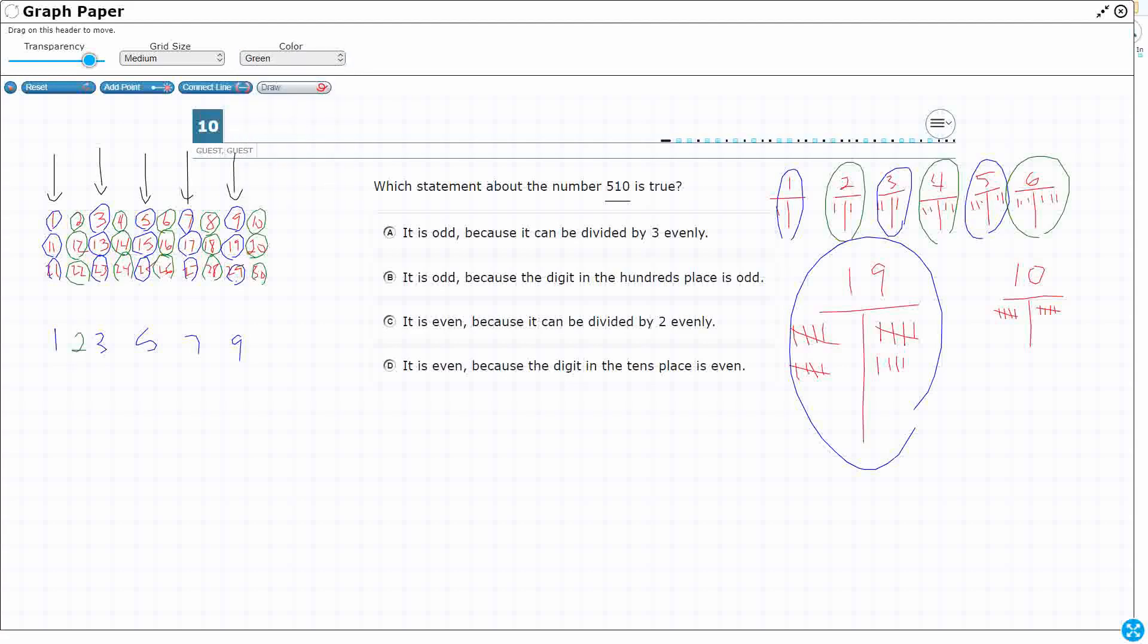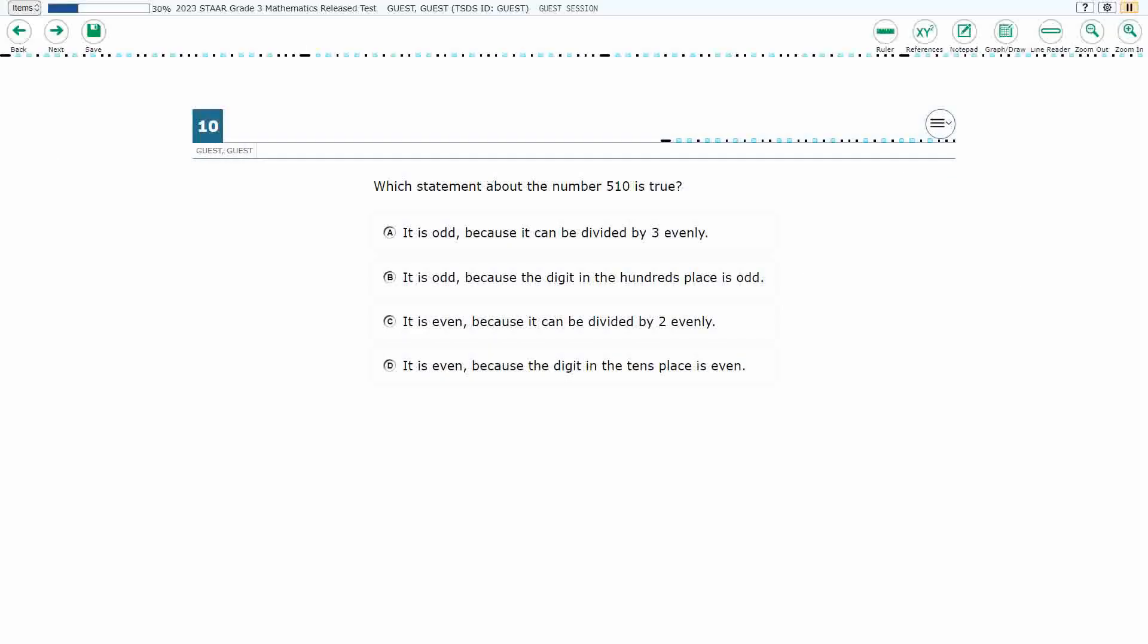If you have a 2 in the ones digit, a 4 in the ones digit, a 6, an 8, or a 0 in the ones digit, you're even. And what do we have in the ones digit? We have a 0, which means it's going to be even. And our answer here is C, because it can be divided by 2 evenly.